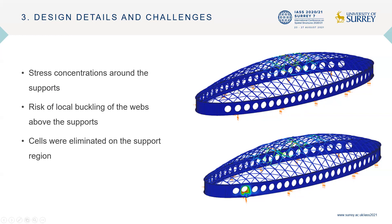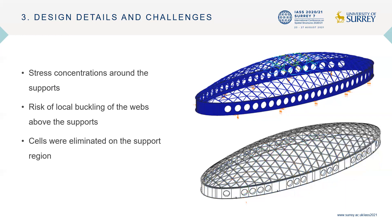The supporting beam was created with a double web, and the web was connected also with some circular tubes which created the perimeter of the web holes. Here we can see the finite element model of the skylight with the eliminated circular cells around the supporting points.